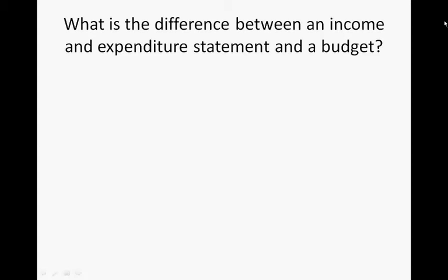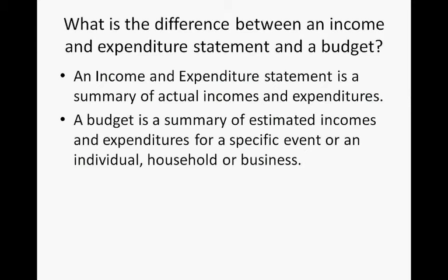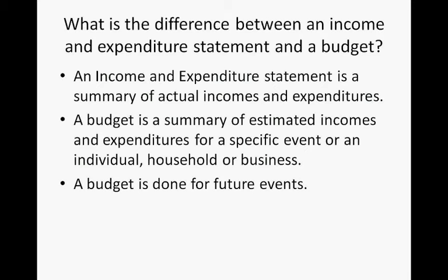What is the difference between an income and expenditure statement and a budget? An income and expenditure statement is a summary of actual incomes and expenditures — in a household, it's money that was actually earned and money that was actually spent. A budget is a summary of estimated incomes and expenditures for a specific event, individual, household, or business. At the beginning of each month you set up a budget, estimating your income and how you would spend your money. A budget is done for future events, whereas an income and expenditure statement is done for a month that has already passed.